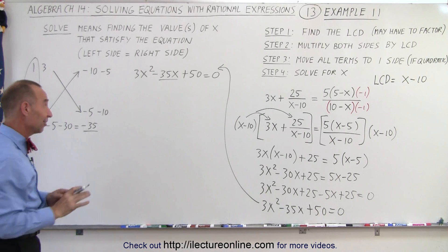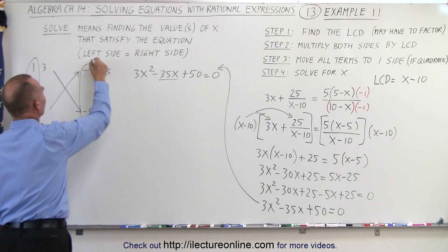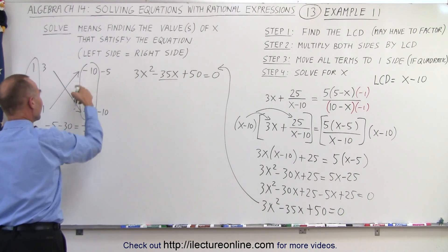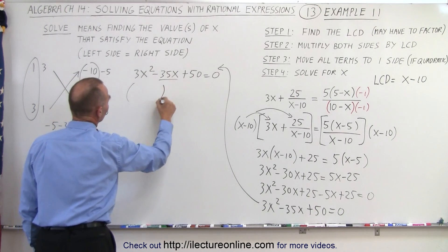That was actually not set up. That's just purely by accident. I was lucky with the numbers. But notice that if I multiply 1 times negative 5 and 3 times negative 10, I get the right middle term, which means that this can be factored as follows.